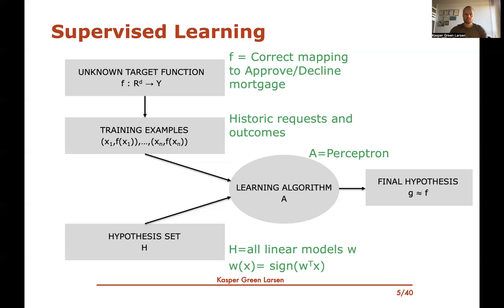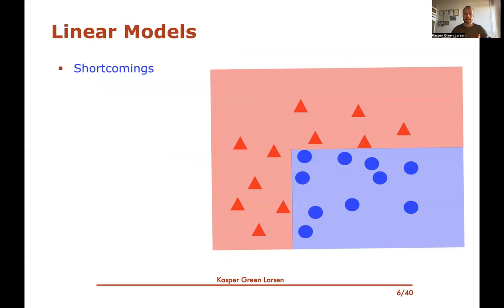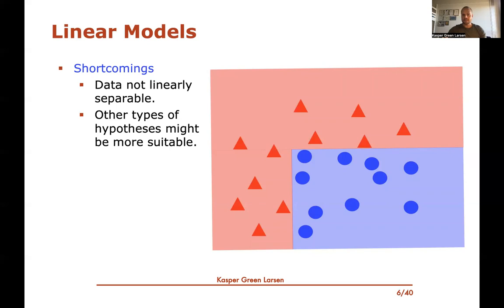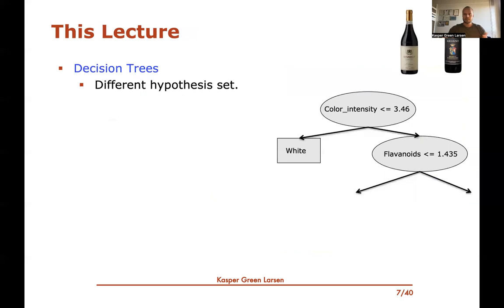Linear models are not perfect. For example, in this dataset it seems very simple to classify: everything in the bottom right corner should be blue and everything else red, but there's no line or hyperplane in 2D that achieves this separation. So the data is not linearly separable, which motivates considering a different type of hypothesis.